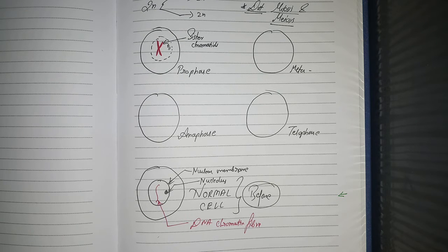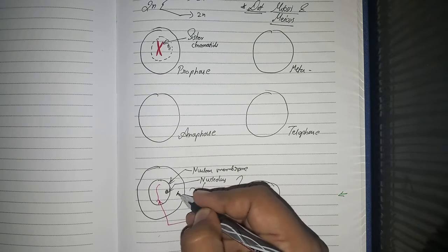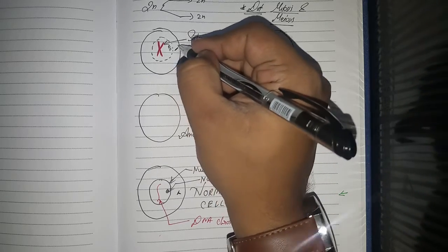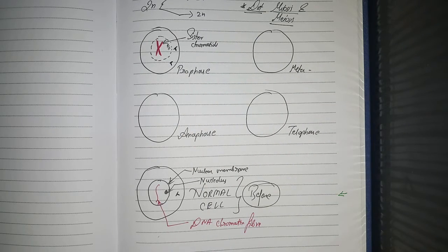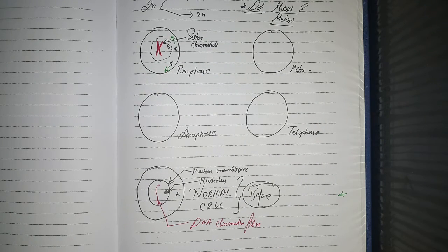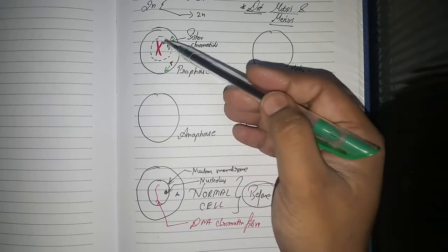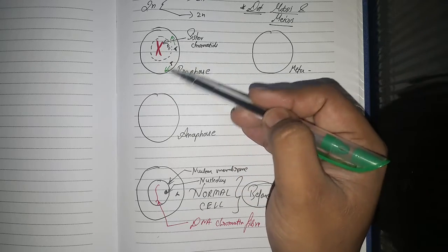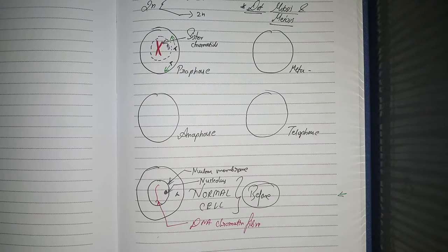One more important thing happens in prophase: centrioles are present in the normal cell, and they double. Then the centrioles start to move in opposite directions. So to summarize prophase: chromatin fiber thickens, centrioles divide and move in opposite directions, nucleolus disappears, and nuclear membrane starts to disappear.